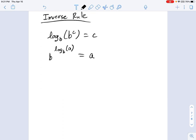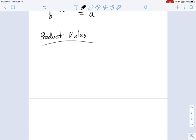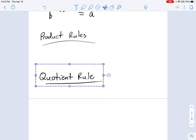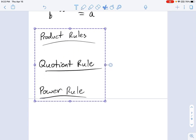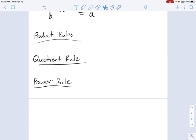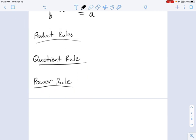And the last set, this is the new ones we're getting into and some of the most useful. These are called product rules, quotient rule, and the last one is called the power rule. You have these three rules, and these are some of the most frequently used rules of logarithms, and they're pretty simple.